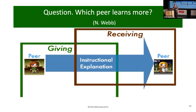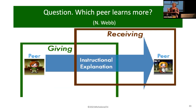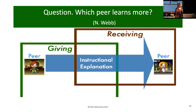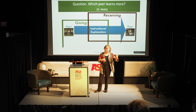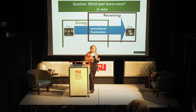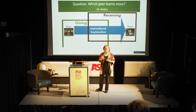Here's a study from the 1970s that puzzled everyone at the time. For peers interacting, the one who gave the explanation learned a lot more than the one who received it. Now we can explain it: the person who received the explanation could be passive, but the person who gives the explanation is generative. So it's not clear that receiving feedback is always beneficial.